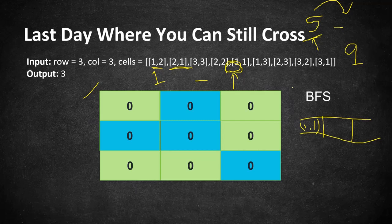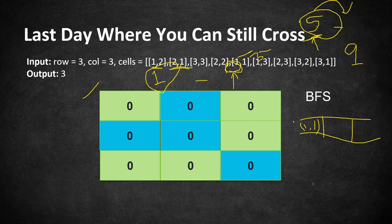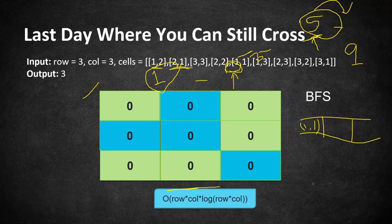If we can cross on day five, the answer could be five or higher, so we fix the left bound to five and search between five and nine. If we cannot cross, the answer must be less than five, so we fix the right bound to four and search between one and four. We keep adjusting bounds until we arrive at the result. The overall time complexity is O(row × column × log(row × column)) — BFS takes O(row × column) and binary search adds the log factor.